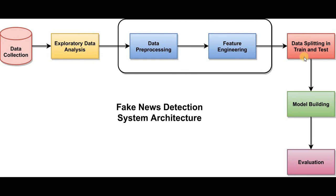After converting the textual data into features, we will move towards data splitting into train and test sets. In this step, we will bifurcate the data into training and testing. We will keep some percentage of data for training and some for testing — normally 70% for training and 30% for testing, or 80% for training and 20% for testing.